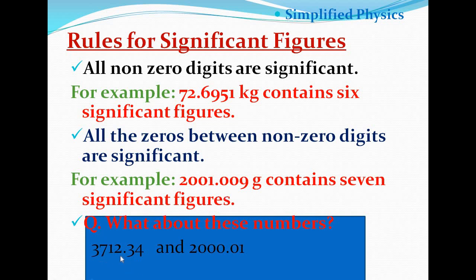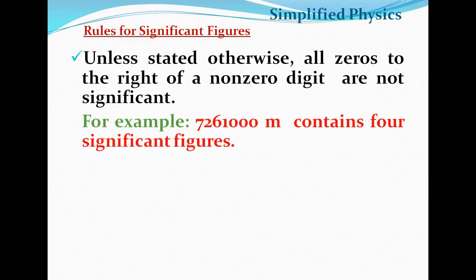The next rule: all zeros to the right of non-zero digits are not significant. For example, the quantity 7261000 meters — that is seven million two hundred sixty-one thousand meters — has only four significant figures; the three trailing zeros are not significant.